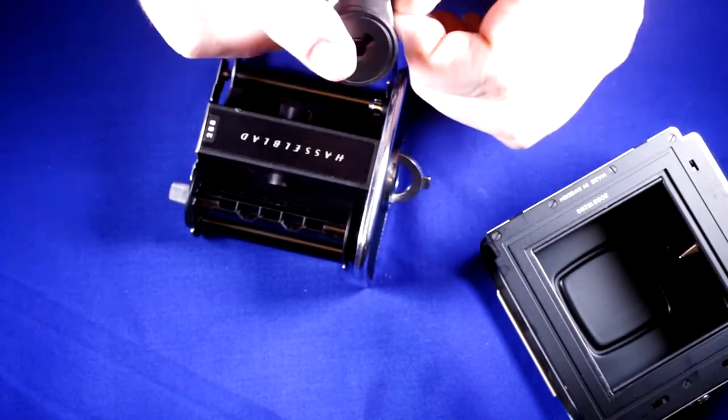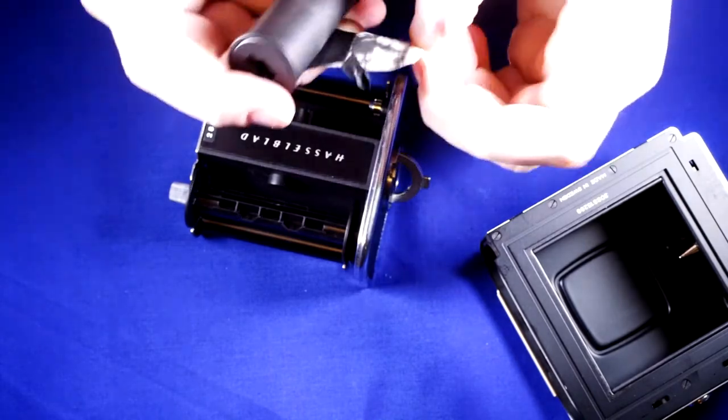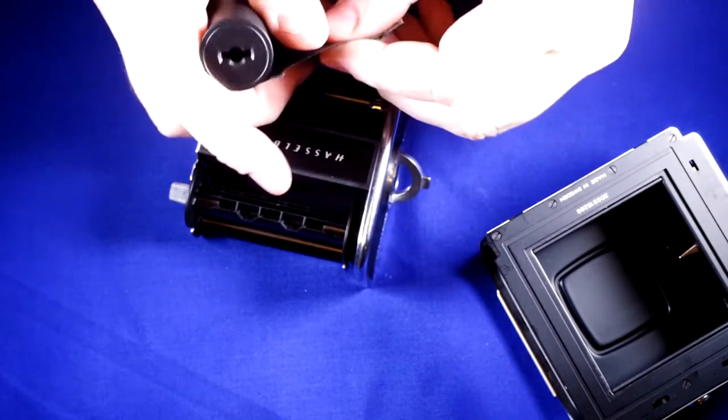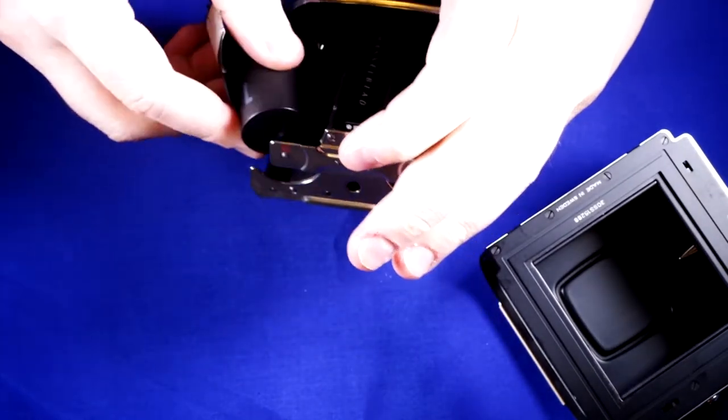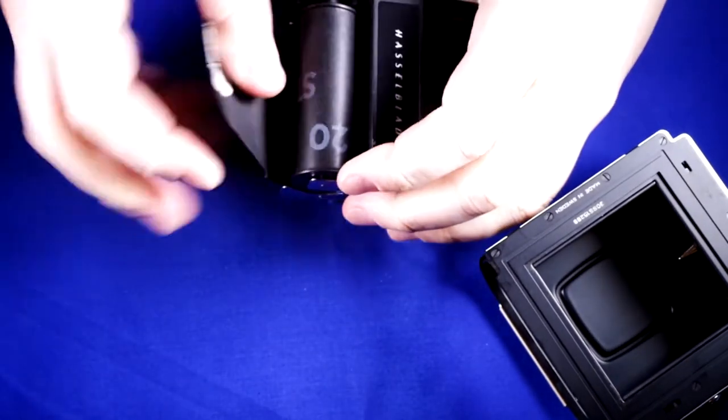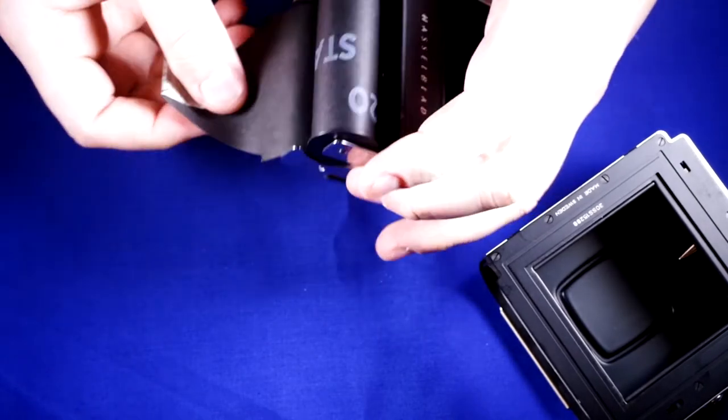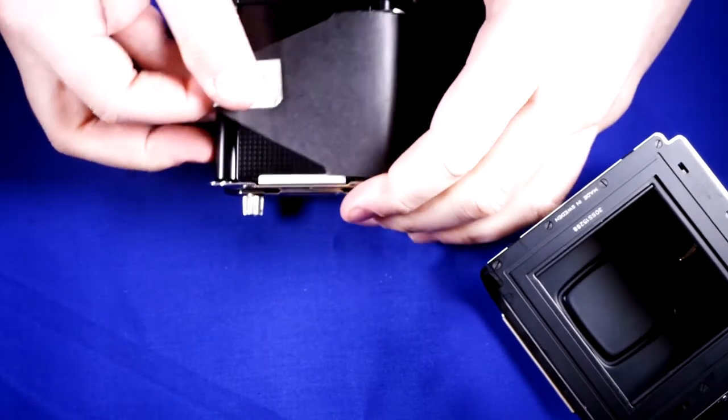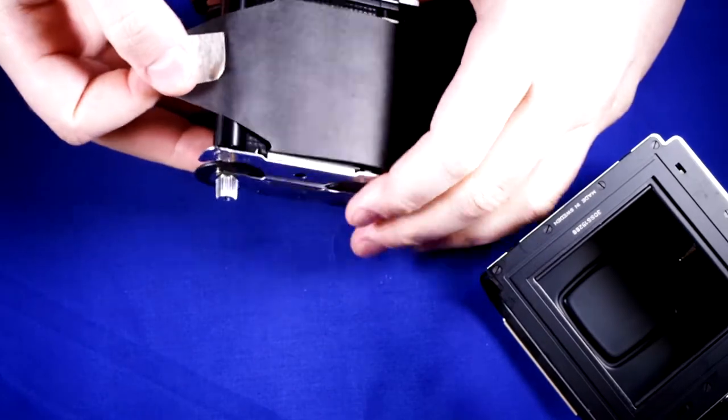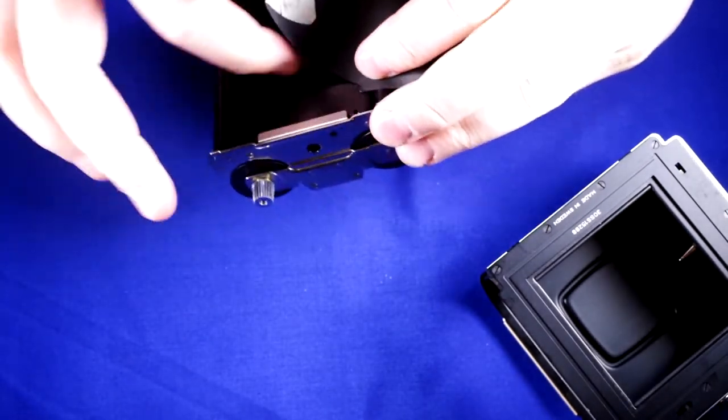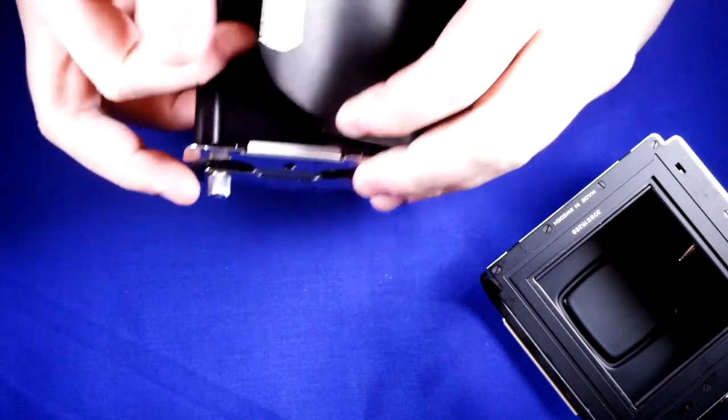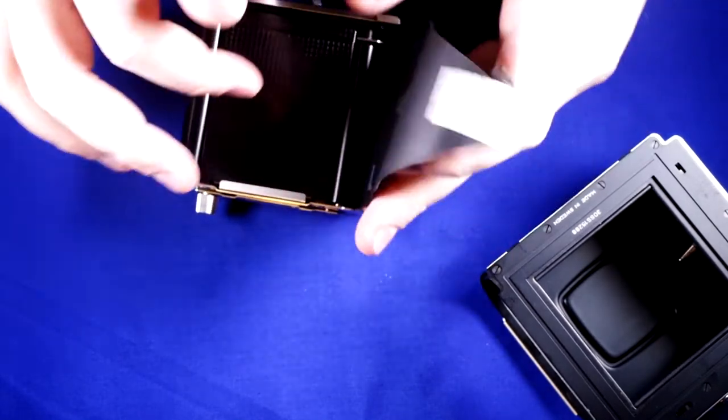I've got a new roll of film here. I'm going to open it up. Now it's going to seem like I put this on backwards, but it'll make sense in just a minute why I do this. It feels like it should pull the other way. But we want to have the black side of the film paper facing the same direction as this. So the printed side is going to touch the film back.